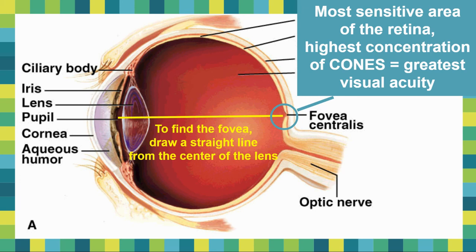To find the fovea centralis when you dissect your eyeball, you take a center line from your lens straight to the back of the eye — that's essentially where the fovea centralis should be.